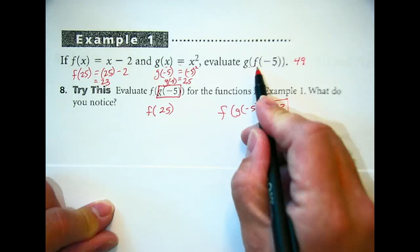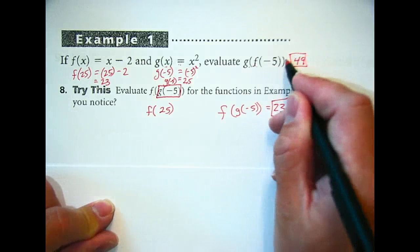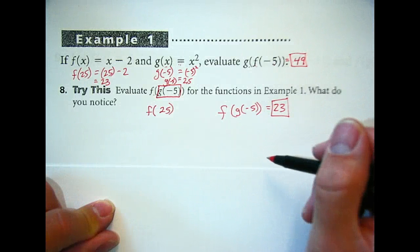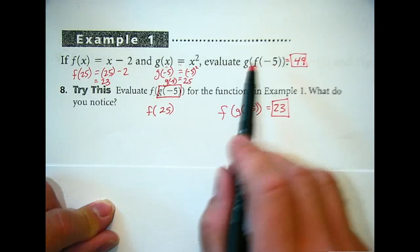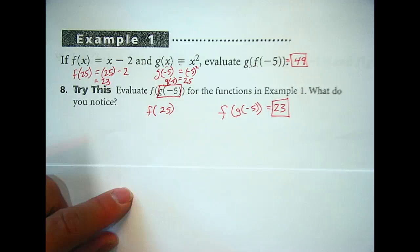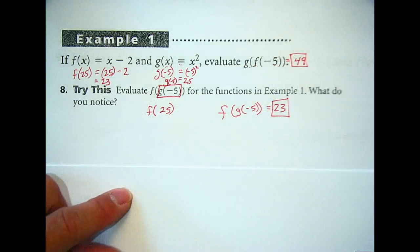g(f(-5)) equals 49. Are they the same? Does it matter which order you do them in? Yeah, order matters in this case. How many of you got this answer, 23 here? Order matters, right?